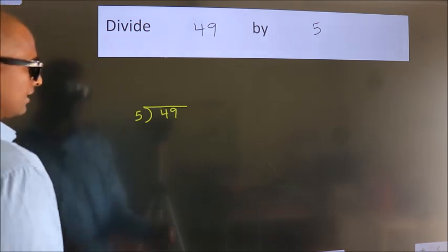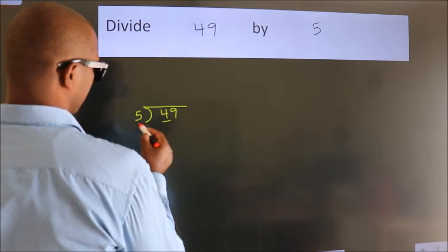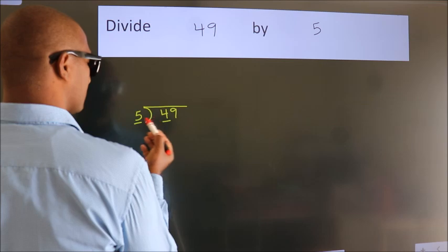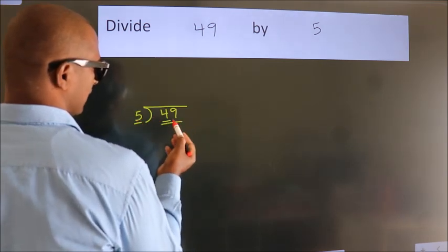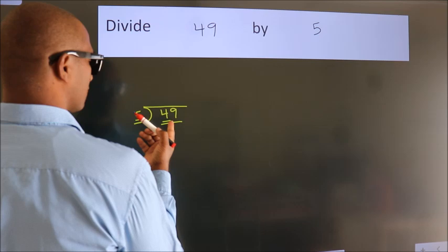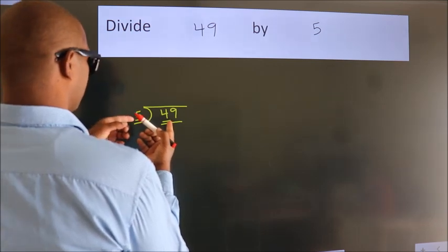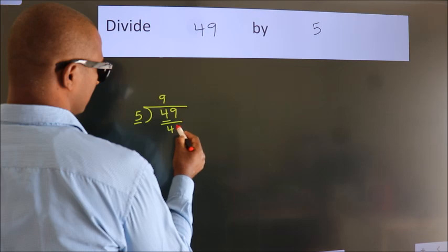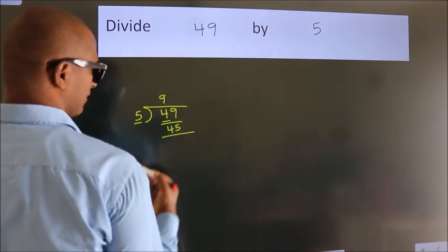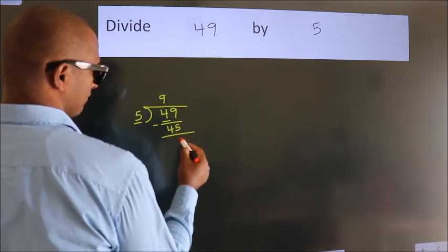Next, here we have 4, here 5. 4 is smaller than 5. So we should take two numbers, 49. A number close to 49 in the 5 table is 5 nines, 45. Now we should subtract. We get 4.